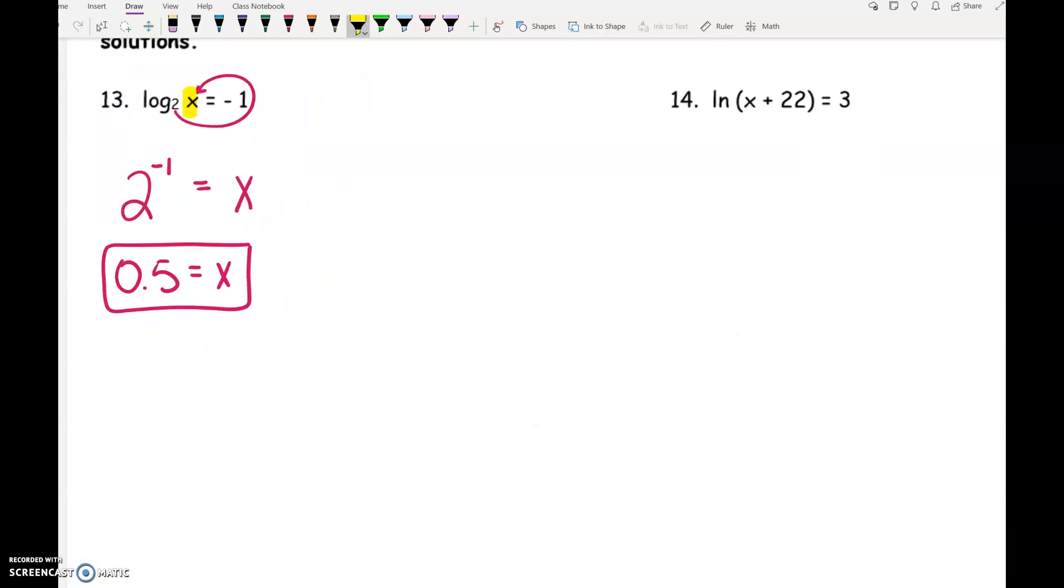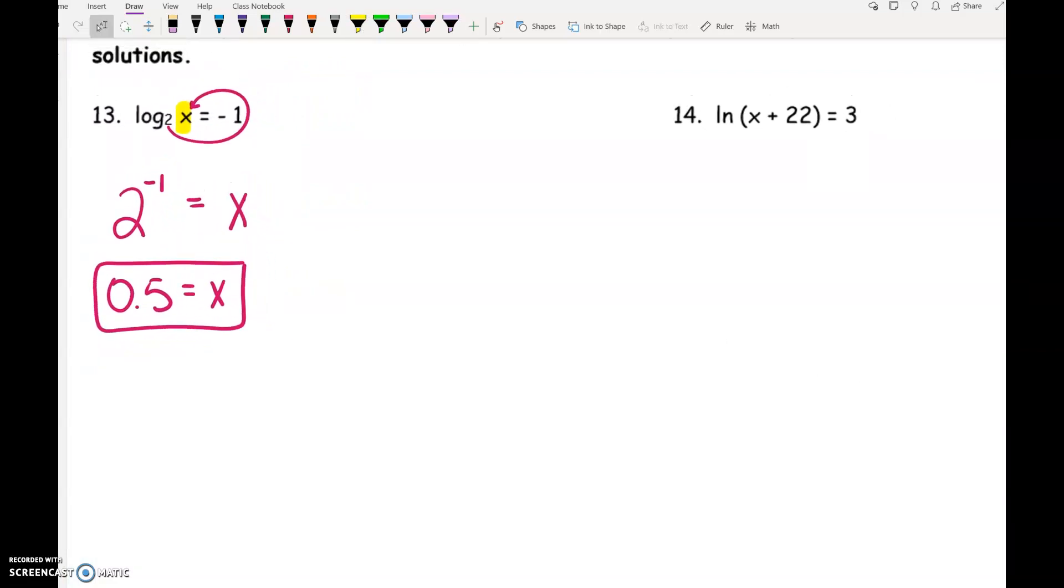Often I have students struggle with LN questions. But if you remember, LN is the same as log base E. So it's often helpful to rewrite this: log base E of x plus 22 equals 3. Or even if you just put a little E underneath that LN just to remind you that there is a base E here. Then we do the log ride. E to the third equals x plus 22.